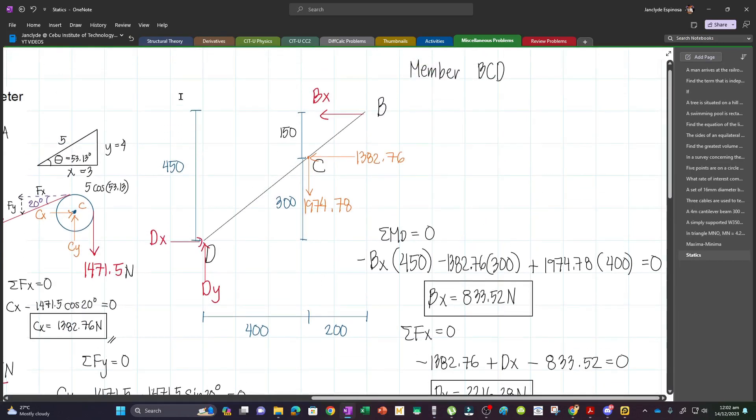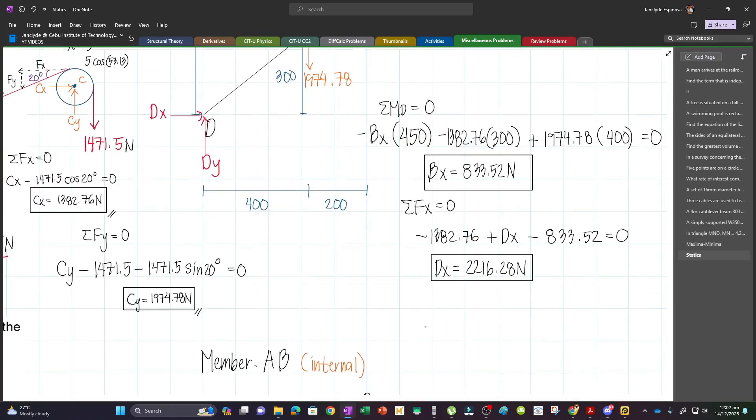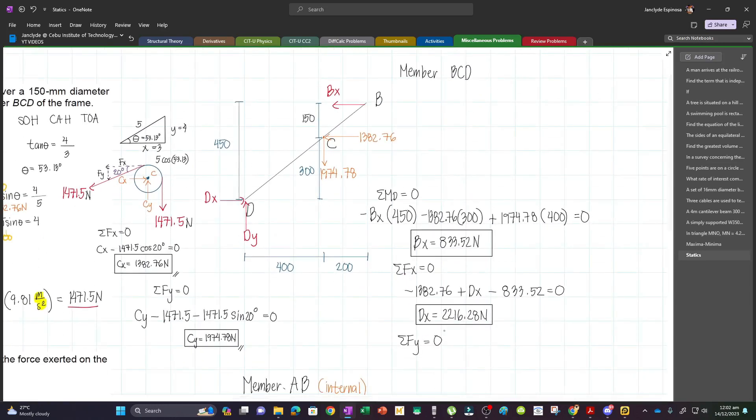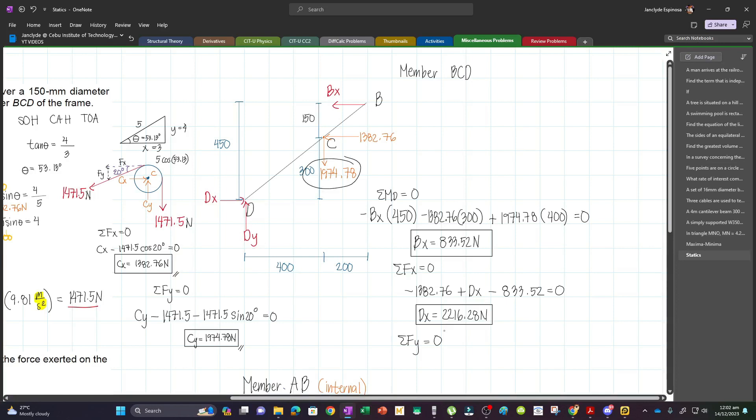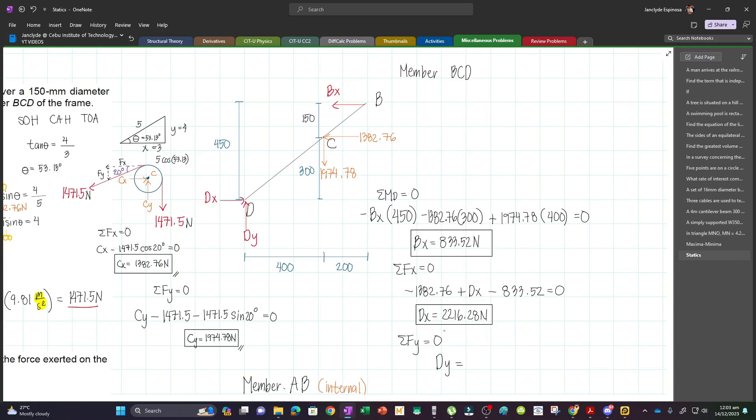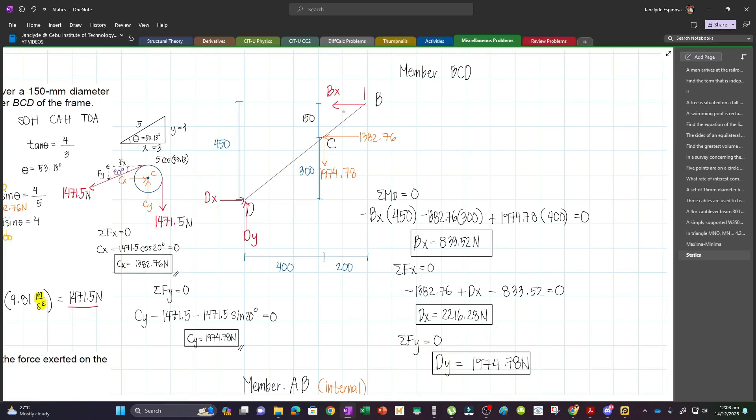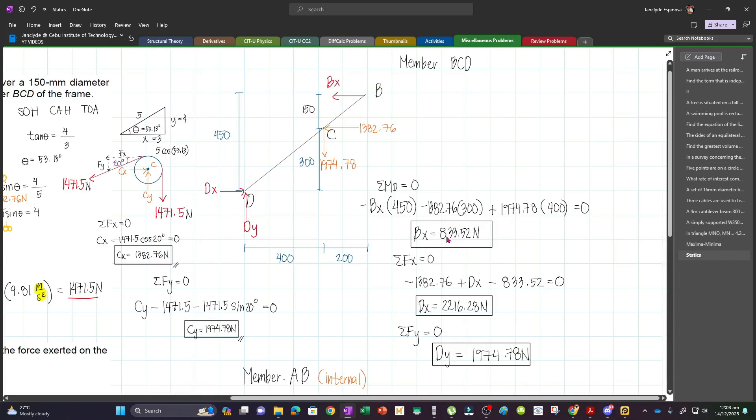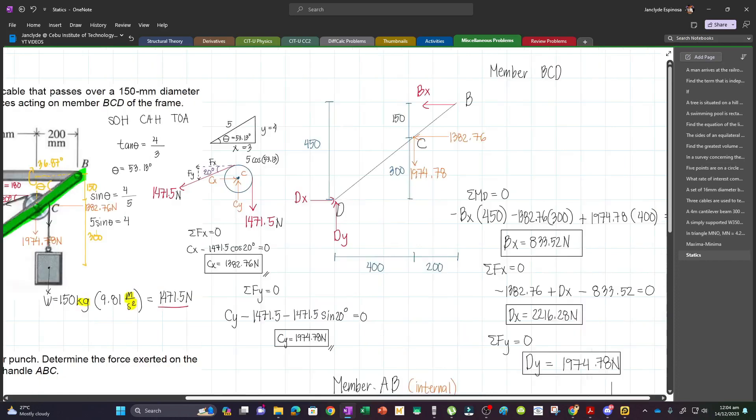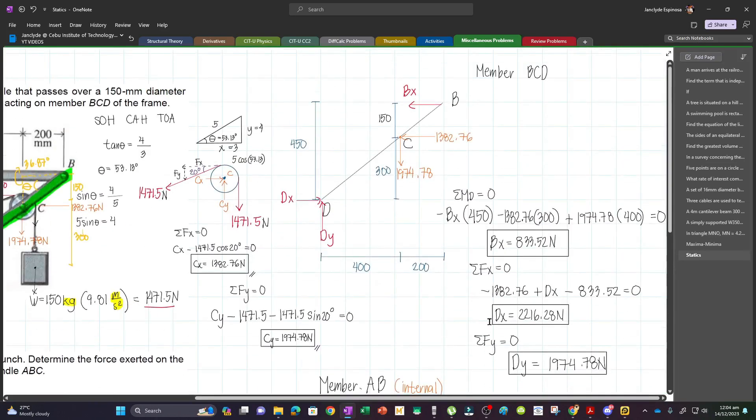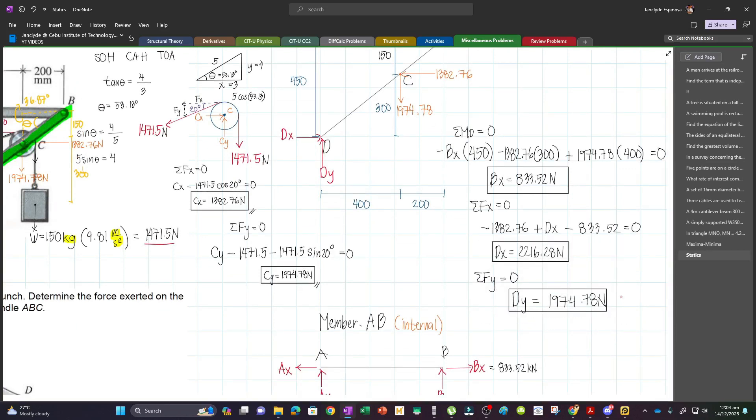For Dy, we sum forces Fy. The forces are 1974.78 downward. By is zero. So Dy equals 1974.78 Newtons. By the way, Ay and By were solved earlier. Now we need the resultant forces.